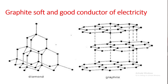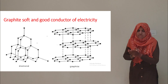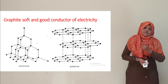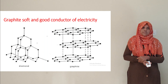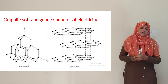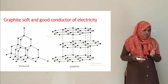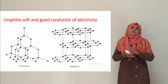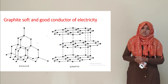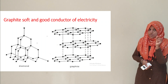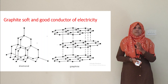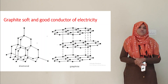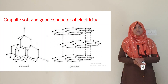Graphite is a good conductor of heat and electricity. Graphite has a layered structure where one layer can slide over the other.